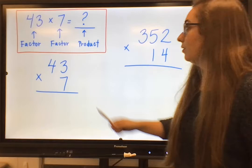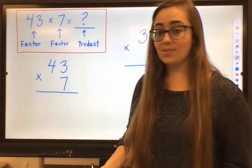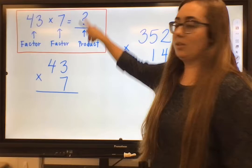To start us off in this red box up here, we've got a typical multiplication problem, 43 times 7. Now the two numbers that you see being multiplied together to get our final result are called our factors. So 43 and 7 are both a factor in this problem.